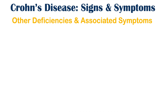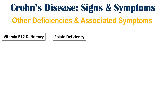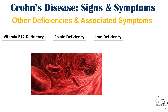There are other nutrient deficiencies and associated symptoms in Crohn's disease. Vitamin B12 deficiency occurs because B12 is absorbed at the terminal ileum. Folate deficiency occurs because folate is absorbed at the duodenum — the first part of the small intestine. Iron deficiency also occurs, as iron is absorbed at the duodenum. Deficiencies in vitamin B12, folate, and iron can all lead to anemia; each of these alone can cause a type of anemia.